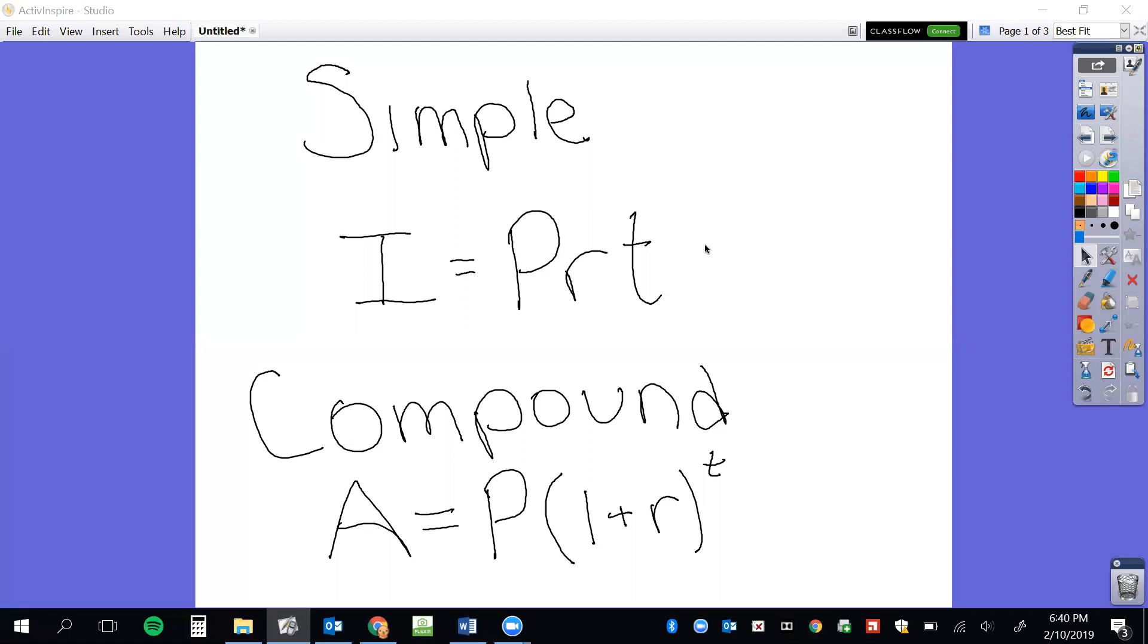So when we work on a problem, we have to change it to a decimal or a fraction. Generally, decimals are easier to work with. And T is time. That tells you how many years this interest is accruing or how many months, usually in terms of years though.